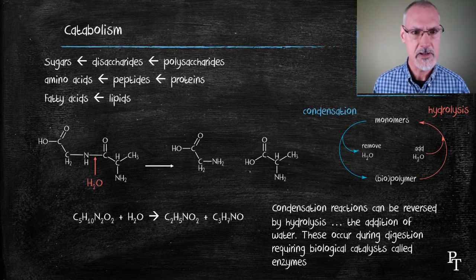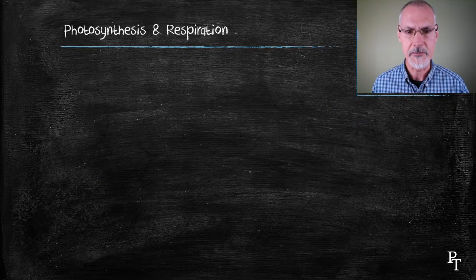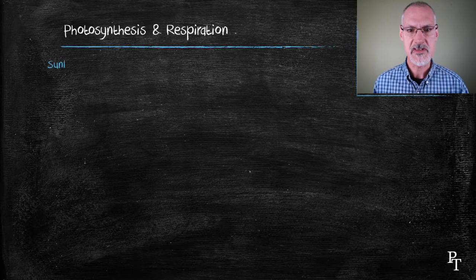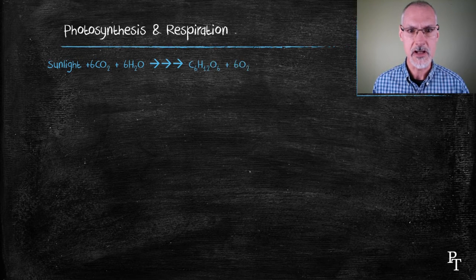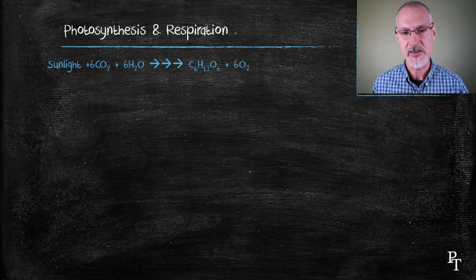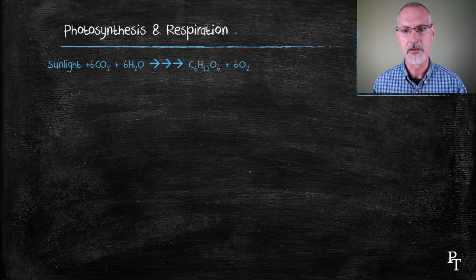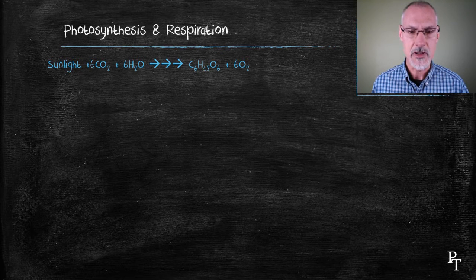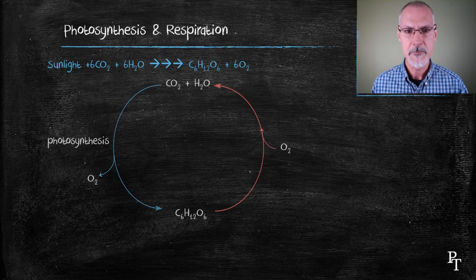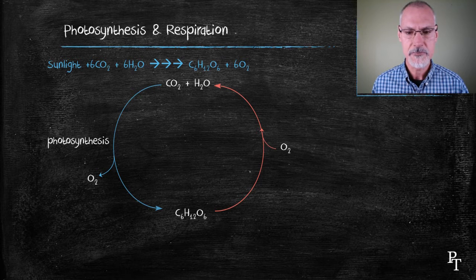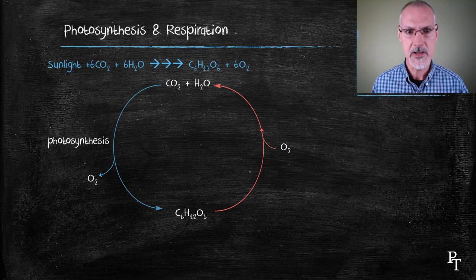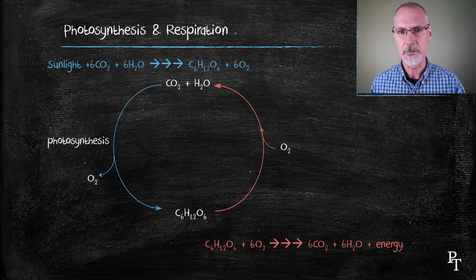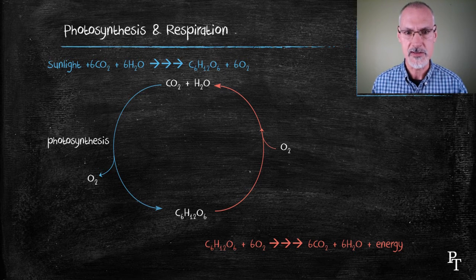Photosynthesis and respiration represent two classic examples of catabolism and anabolism. So photosynthesis is the building up, essentially taking carbon dioxide and water through a series of reactions, that's why I'm going to use multiple arrows here, to make glucose and oxygen. That can be represented in this diagram. That represents an anabolic process. The reverse, respiration, a catabolic process, involves breaking that sugar back down into carbon dioxide and water with the addition of oxygen.